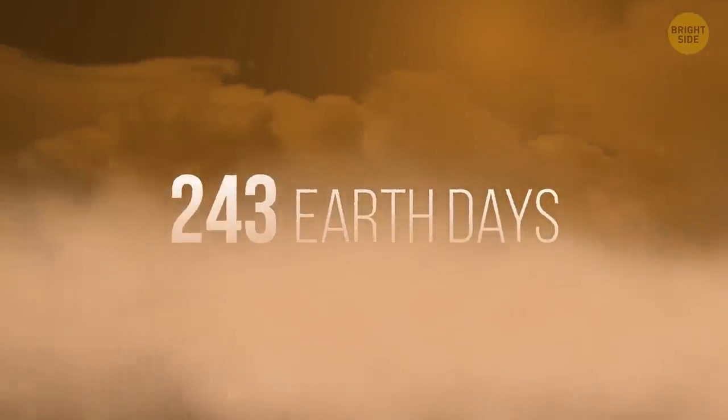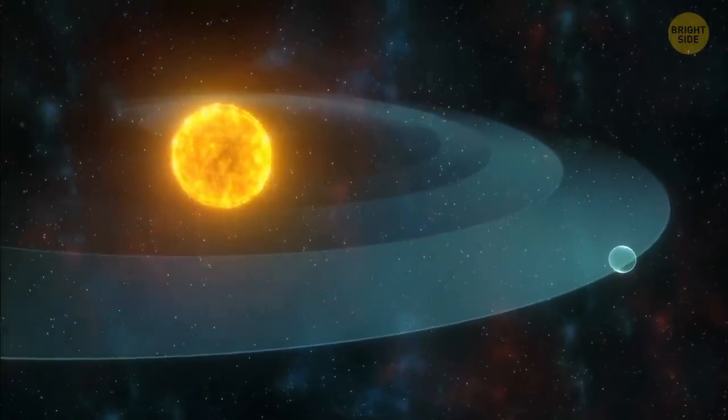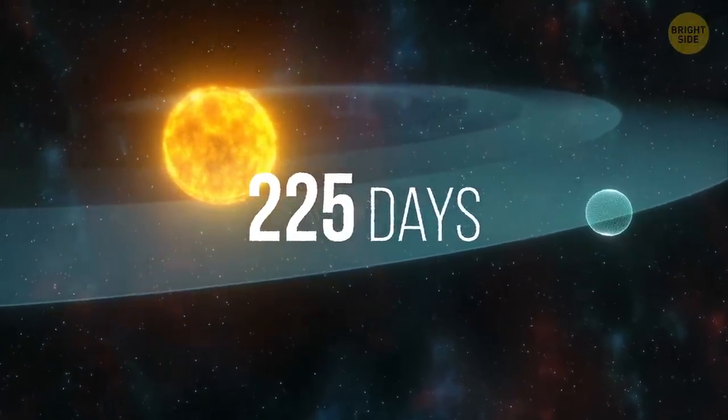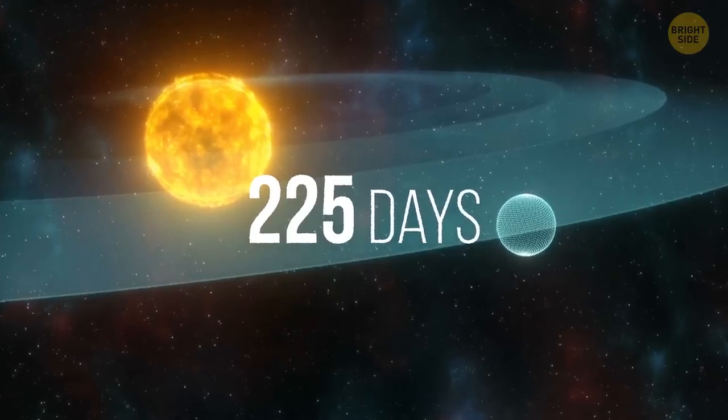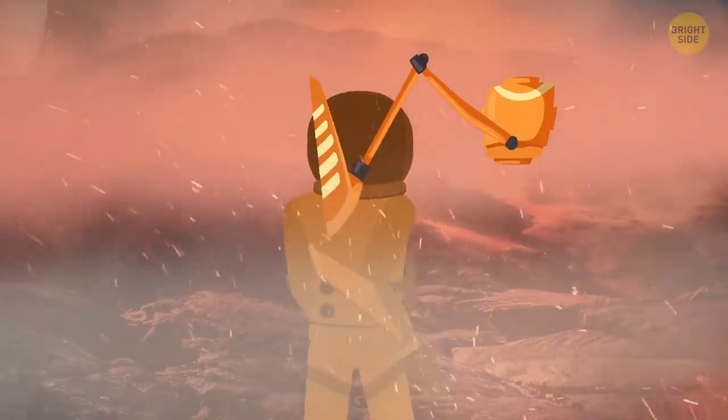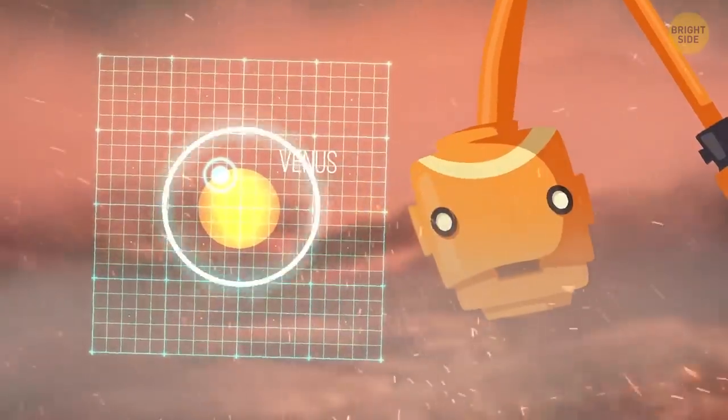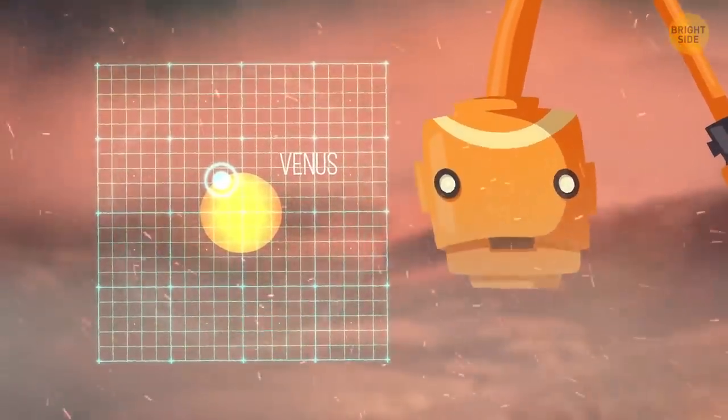And not just because of the heat. A single day on Venus lasts 243 Earth days. In fact, a day on Venus is longer than a year, because it only takes 225 days for it to complete a rotation around the Sun. The robot tells you that it just got lost, and that you'll be back on Earth in no time.